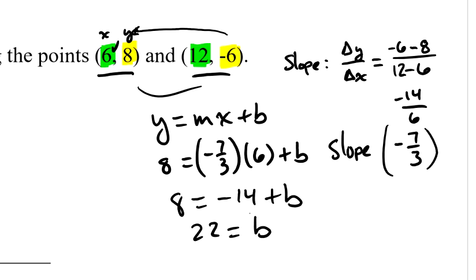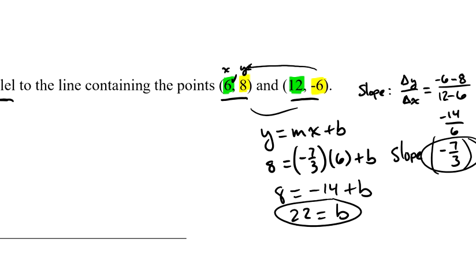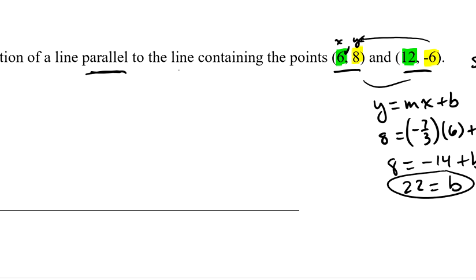my y-intercept is 22, and I also know that my slope was negative 7 thirds. I can write the equation of this line—not my answer, but a line containing these points. So, y equals negative 7 thirds x plus 22.